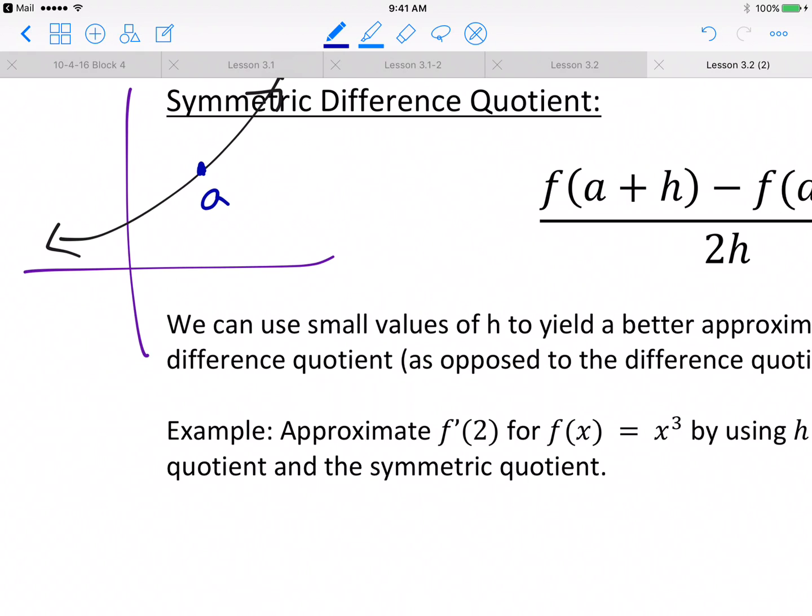And the difference quotient that we know, so point a right there. So your x value is a right there.